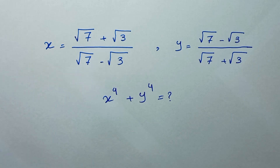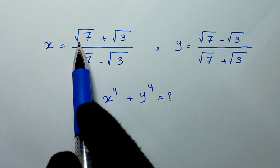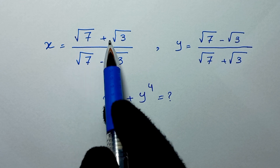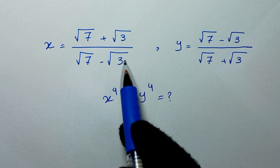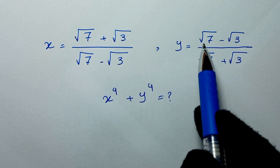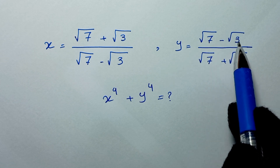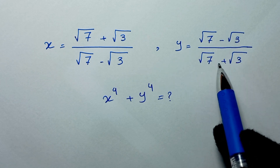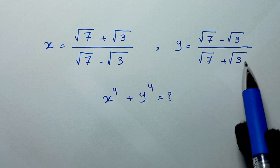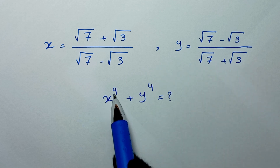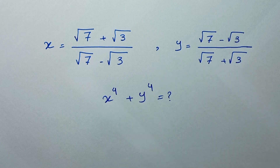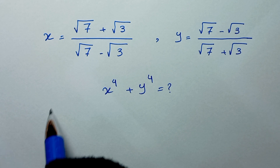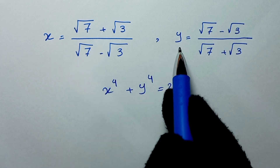Hello my friends, welcome to solve this problem where x is the square root of 7 plus square root of 3 over square root of 7 minus square root of 3, and y is square root of 7 minus square root of 3 over square root of 7 plus square root of 3. We need to find the value of x to the power of 4 plus y to the power of 4. In the first step, we rationalize x and y.